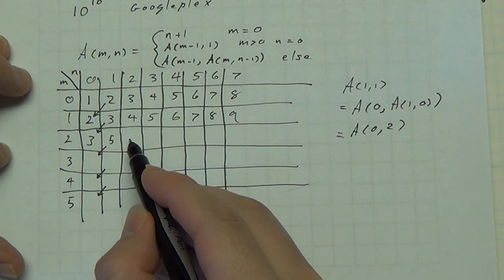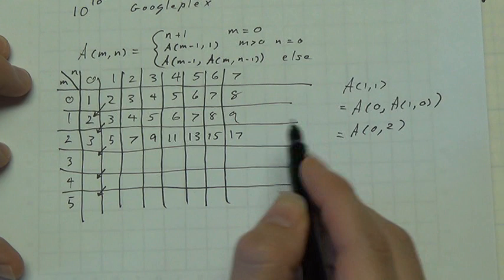3, now we go to 3 from the previous row. 5, now we go to 5 from the previous row. So, 7, 9, 11, 13, 15, 17.